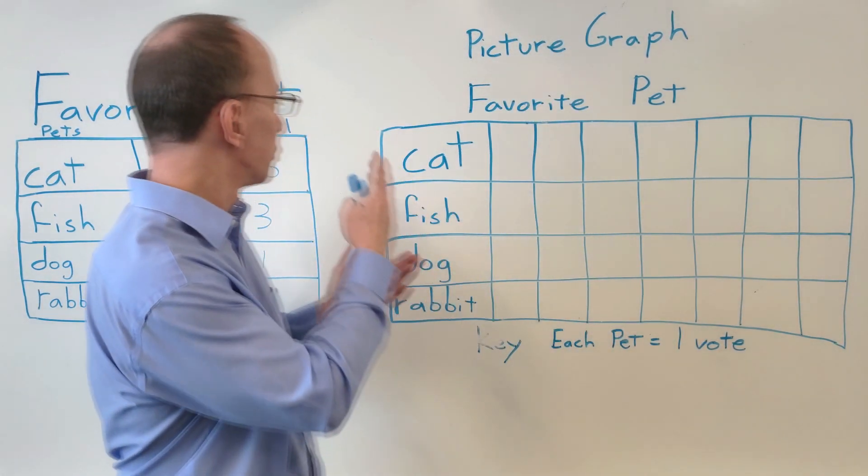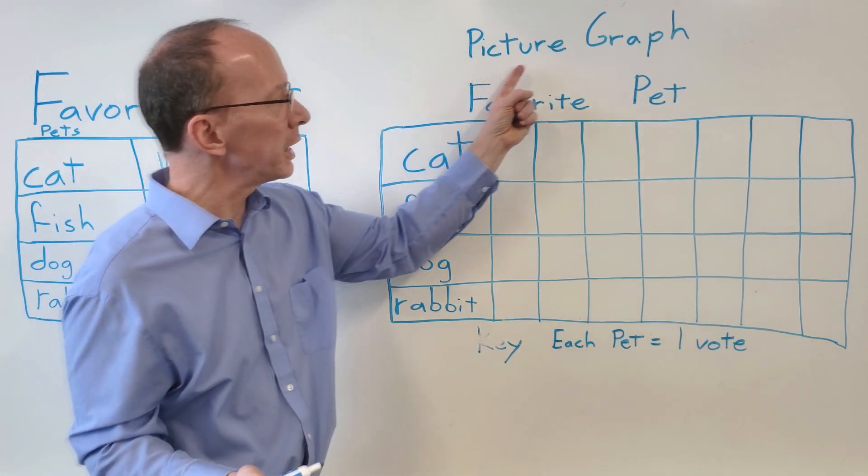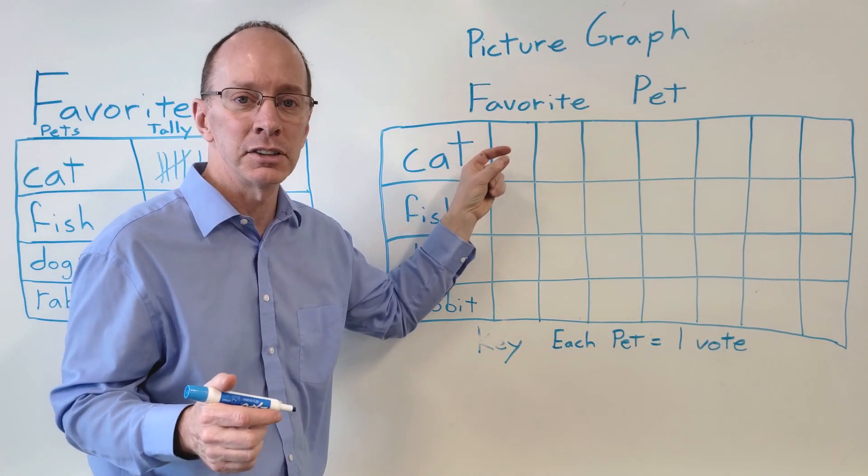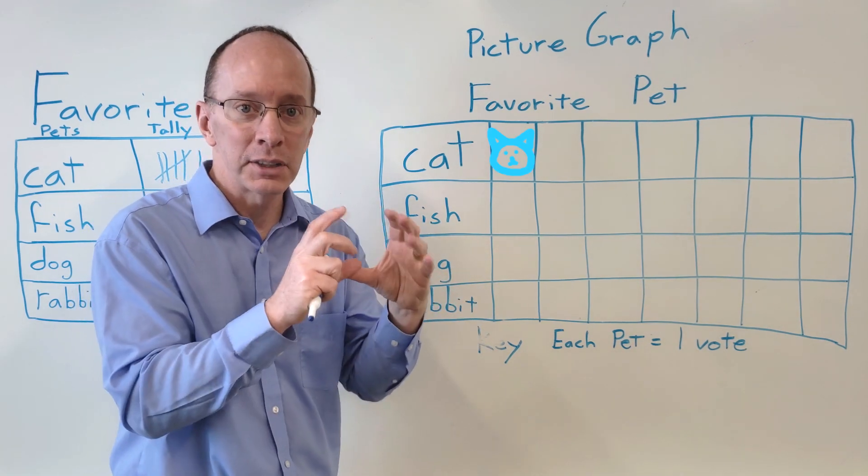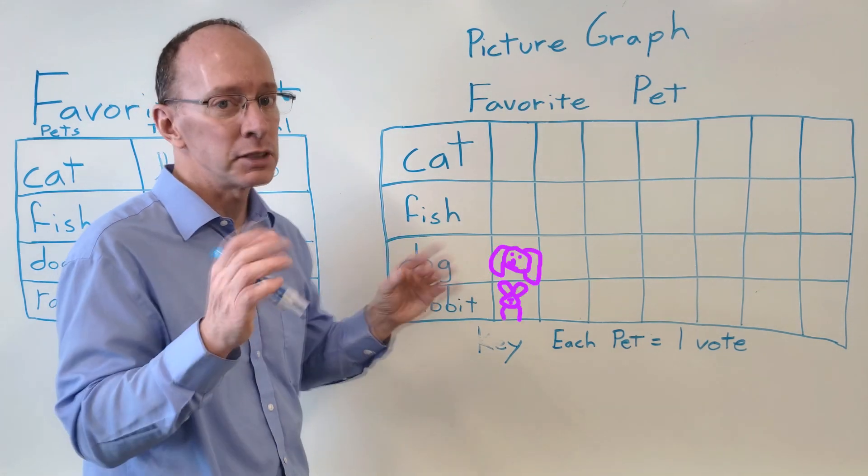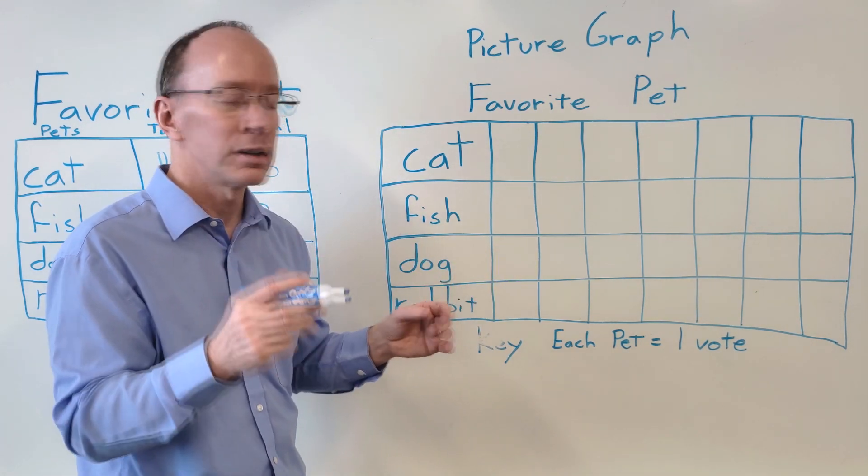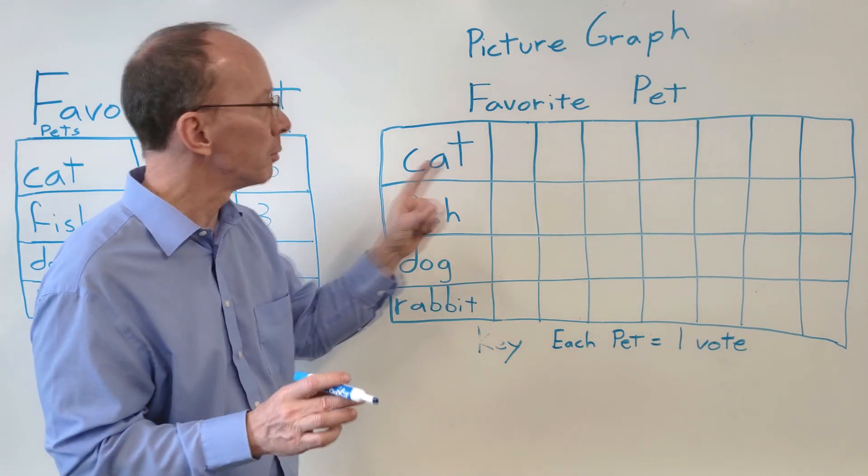And what we're going to do is with this information now, we're going to use a picture graph. And the word picture graph is that we use pictures. You can use circles, smiley faces. You can draw pictures of a cat or a fish. Just to make it simple, you can just put in a circle. So for today, let's just make it simple and make circles in our picture graph.